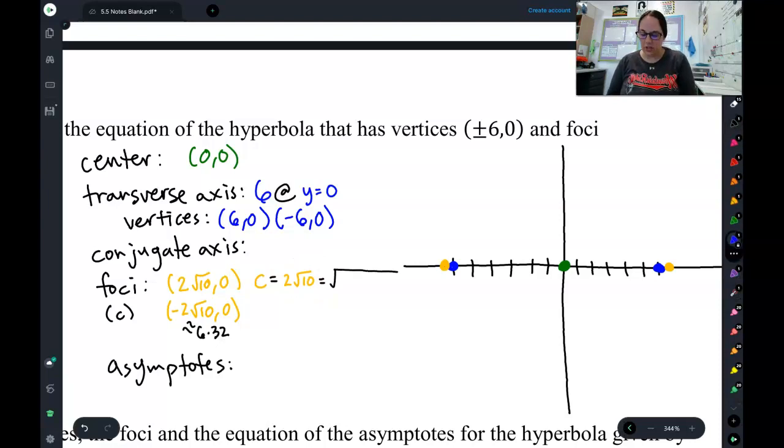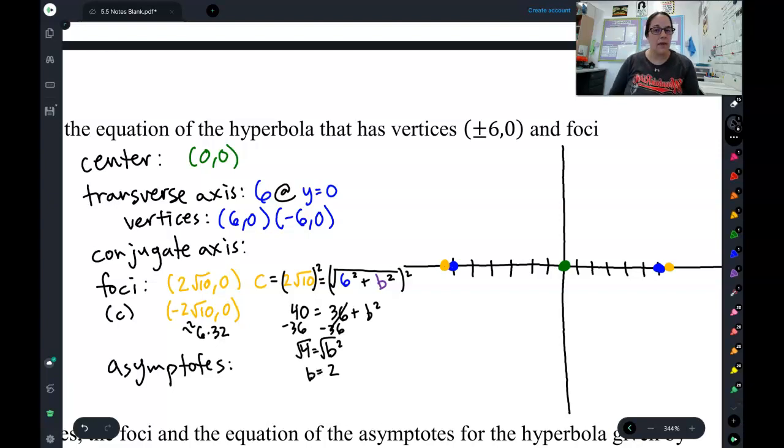Here's what I mean by that. I know that my C equation is going to be transverse squared plus conjugate squared. And then I can take this and solve for B. Square both sides first, so I get 40 equals 36 plus B squared. Minus 36 to both sides, so I get 4 equals B squared. Square root, and I get that B is 2.